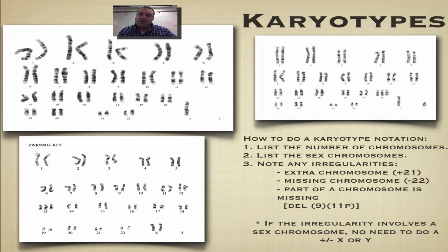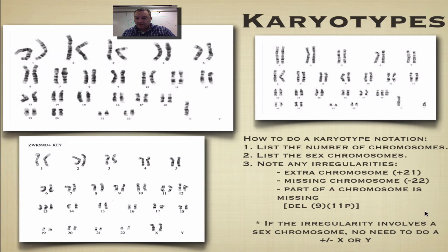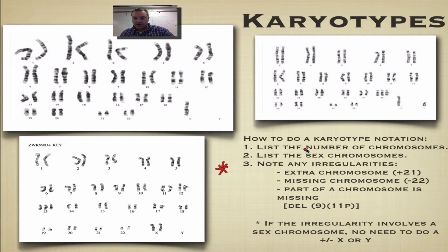So how do you make that notation? How do you read a karyotype? You need to know how to make a karyotype notation to answer your questions. The first thing you're going to do is list the number of chromosomes — you're looking for pairs.